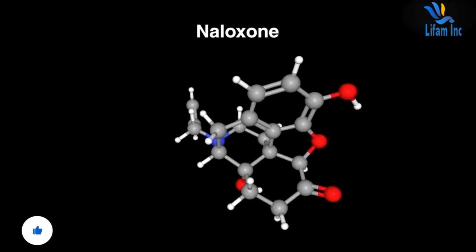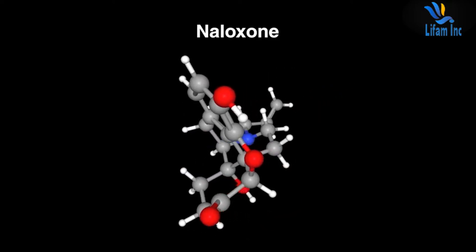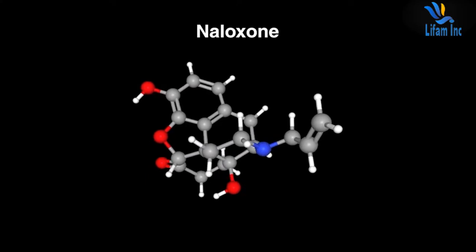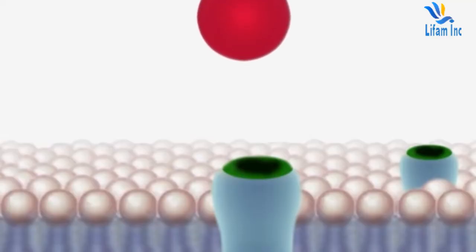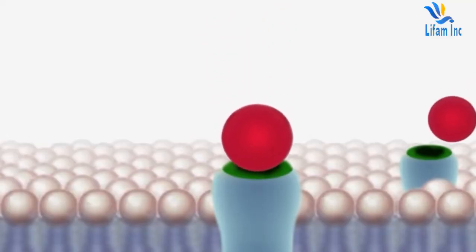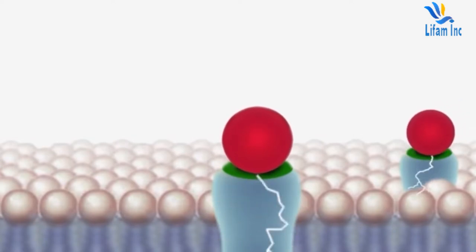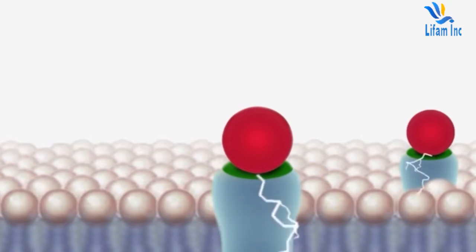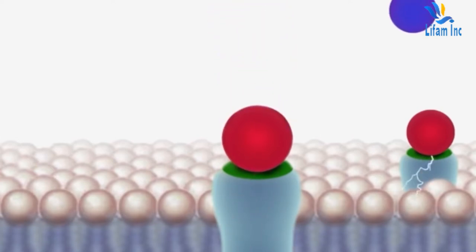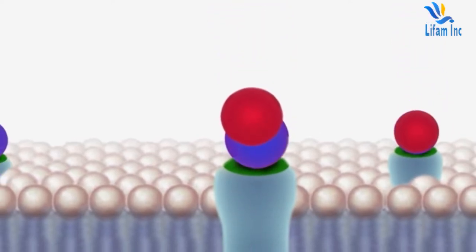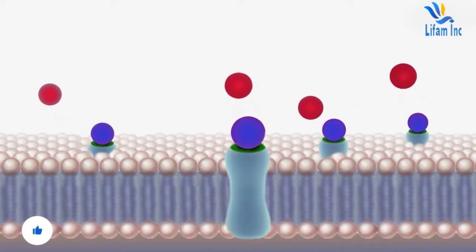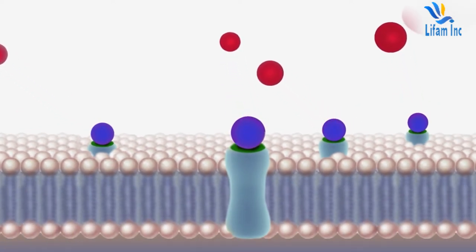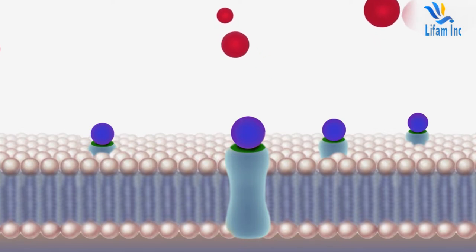Naloxone is a synthetic derivative of thebaine, a morphine alkaloid, and has a chemical structure resembling that of oxymorphone. Oxymorphone and other opioids work by binding to and activating opioid receptors in the central nervous system, causing analgesia, respiratory depression, and other effects. Although its precise mechanism of action is not fully understood, naloxone appears to act as a competitive antagonist at these opioid receptors and has the greatest affinity for mu opioid receptors. By binding to the opioid receptors, naloxone displaces opioid agonists and thereby reverses their effects.